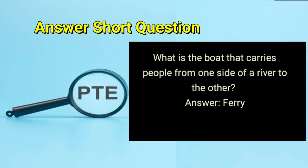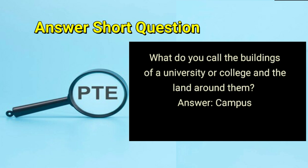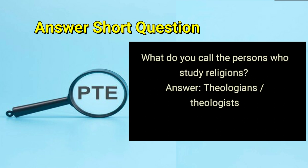What is the boat that carries people from one side of a river to the other? Answer: ferry. What do you call the buildings of a university or college and the land around them? Answer: campus. What do you call the persons who study religions? Answer: theologians or theologists.